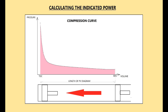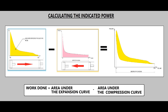When the piston travels from BDC to TDC, it is compressing the charge air — here the piston is doing work on the charge air. The actual work done obtained per power stroke of the engine is given by the difference of the area of the expansion and compression curve, so we need to draw this diagram in the real situation.